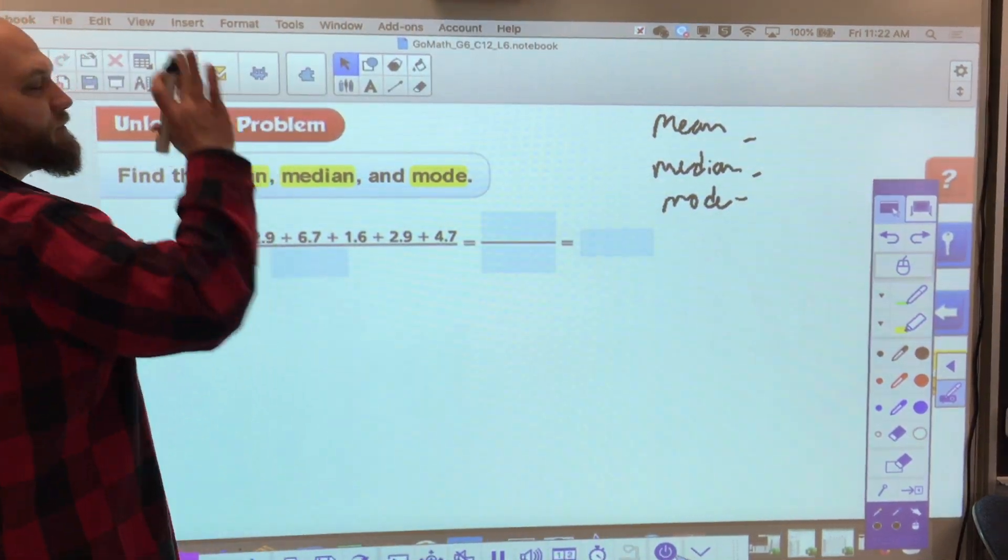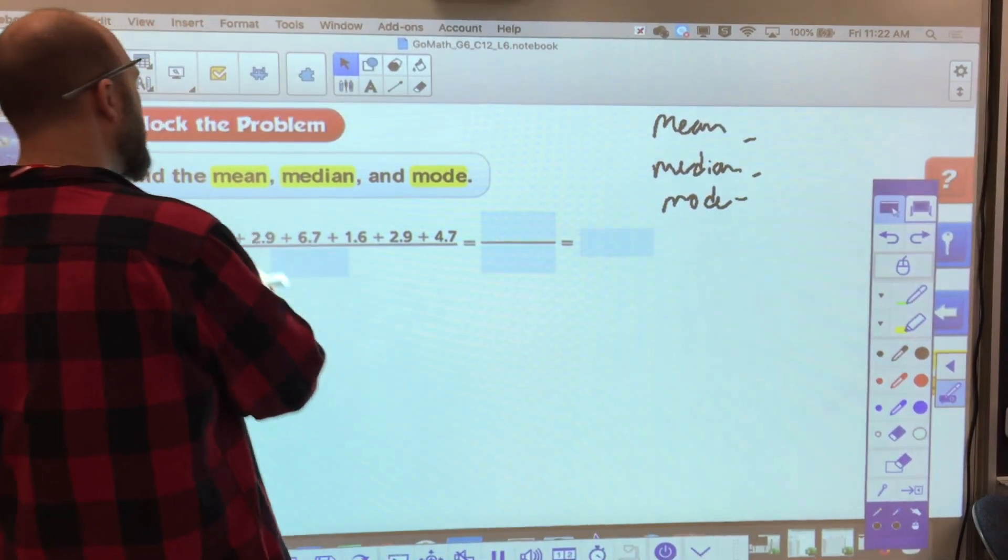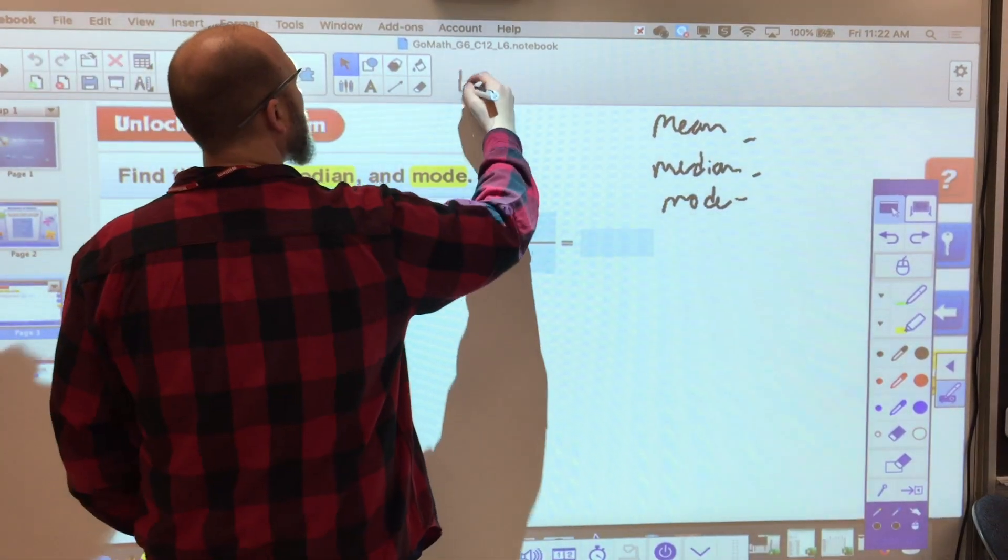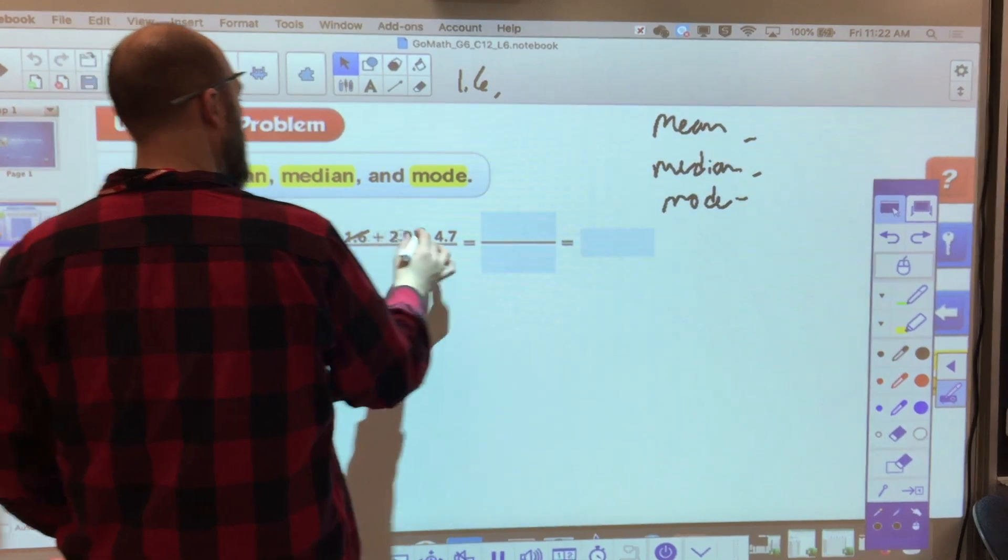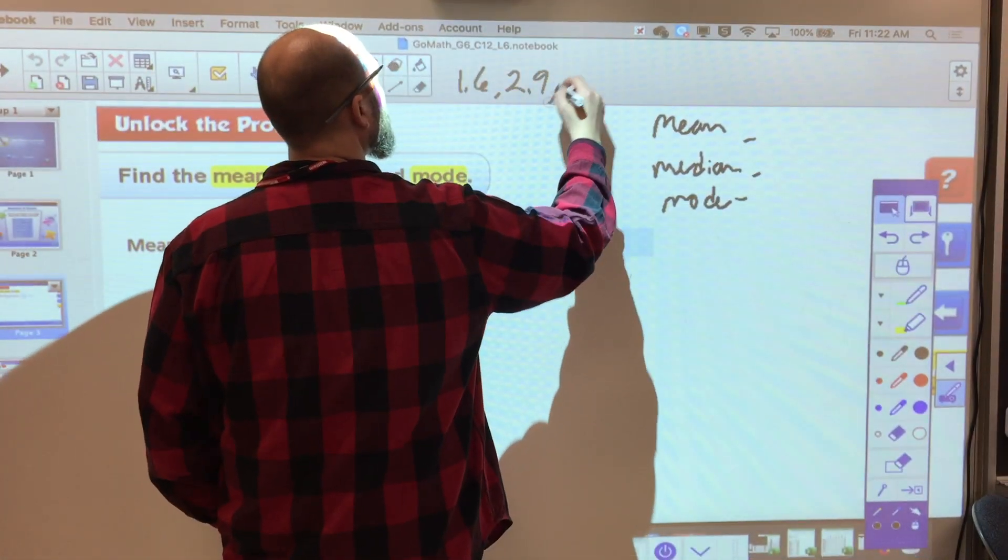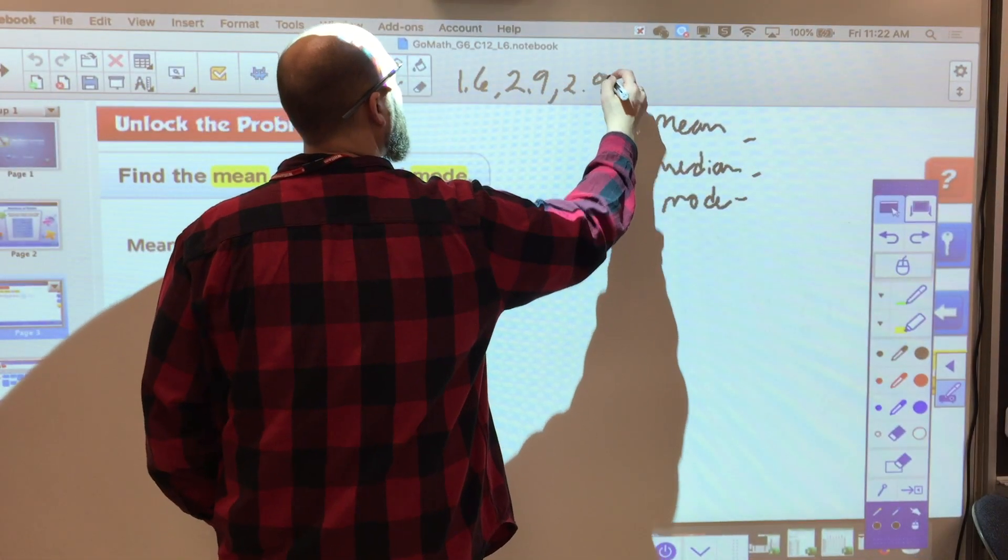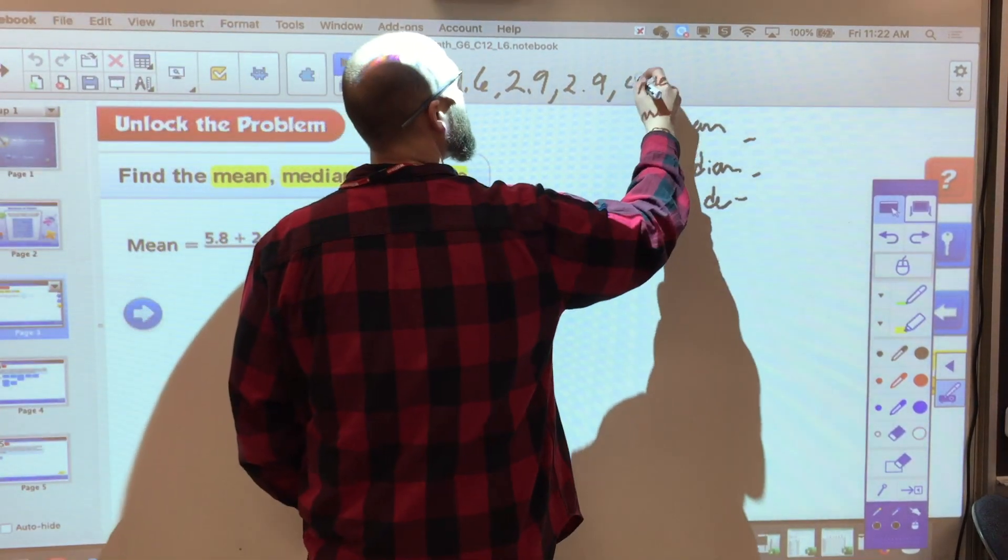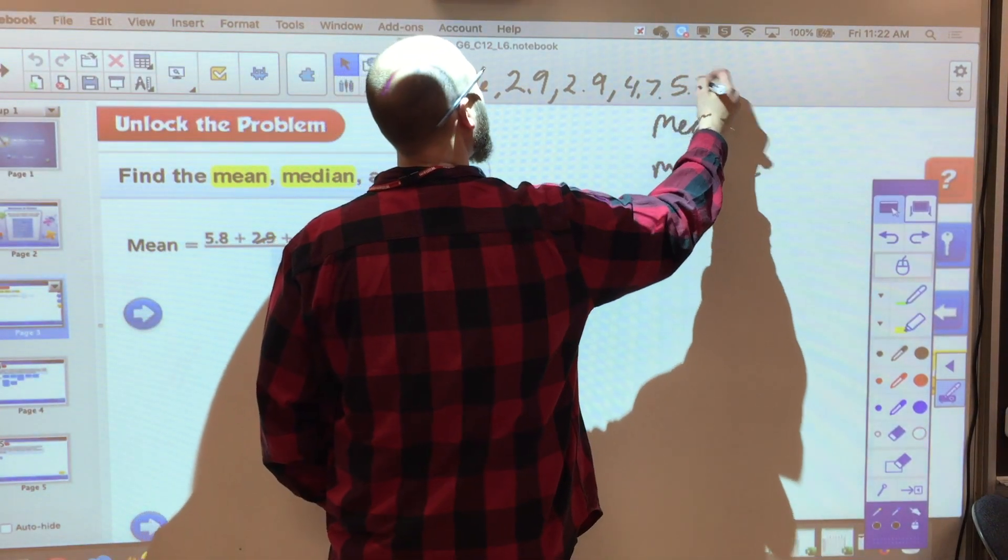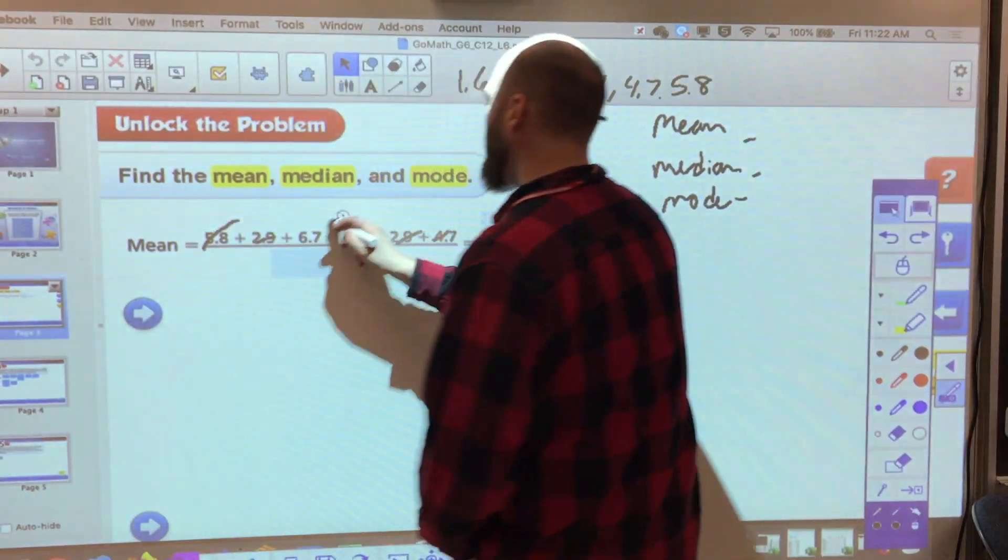Just like I told you, first thing I want to do is put it in order. 1.6, 2.9, 2.9, 4.7, 5.8, and 6.7.